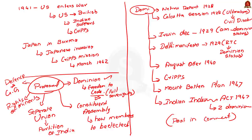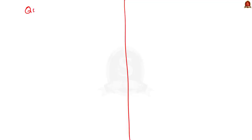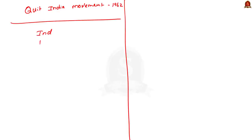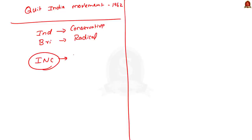The Cripps Mission ended up a failure, which resulted in Mahatma Gandhi initiating the Quit India Movement in August 1942. The Indians considered the proposals of the Cripps Mission to be more conservative, while the British considered them more radical — this was the main reason for failure. The Indian National Congress specifically rejected the mission because it gave the right for provinces to form separate unions, and the INC thought this provision could lead to Balkanization of India.